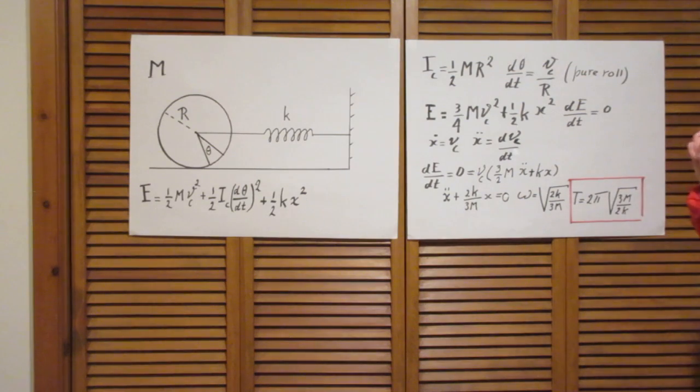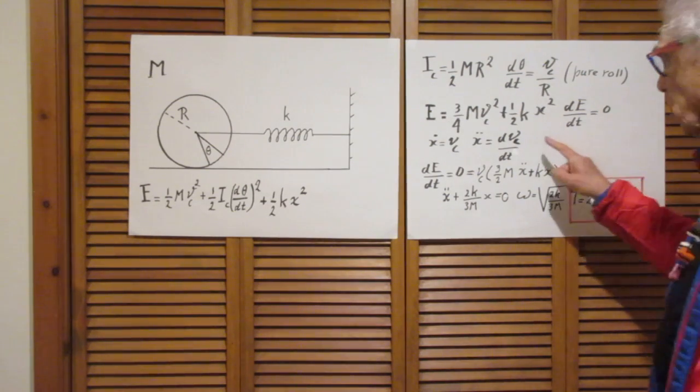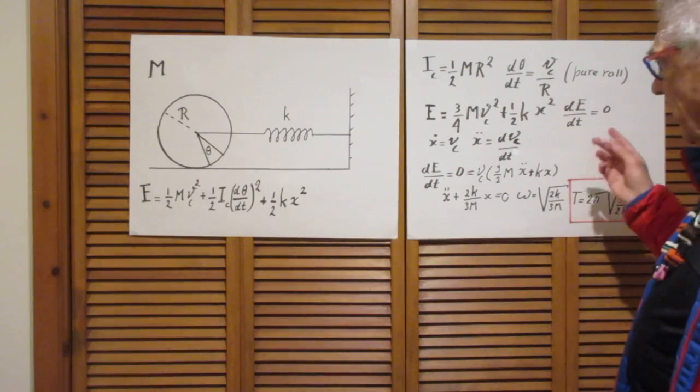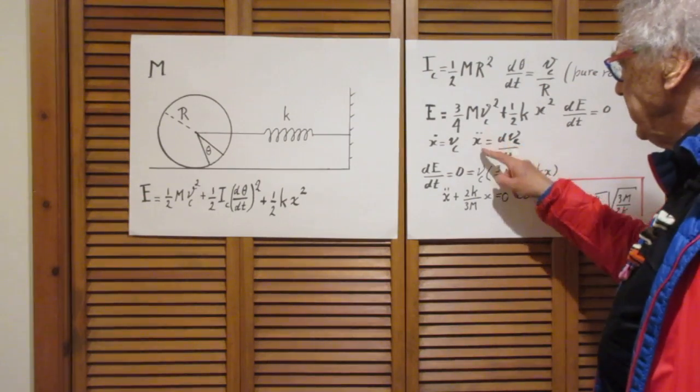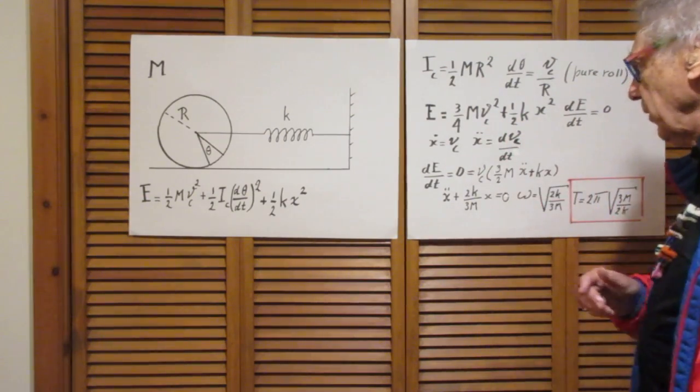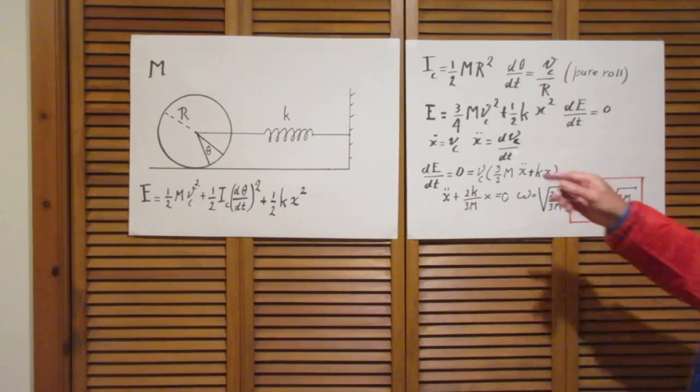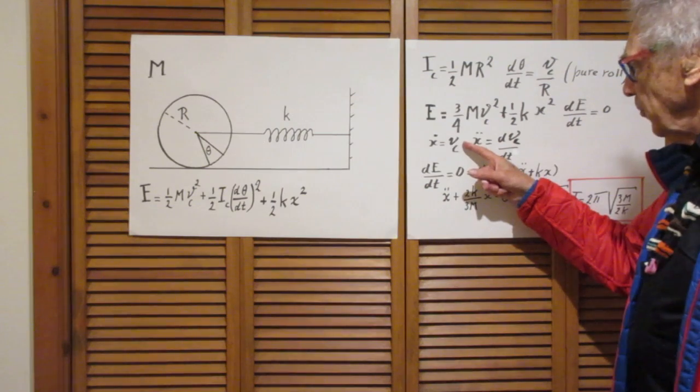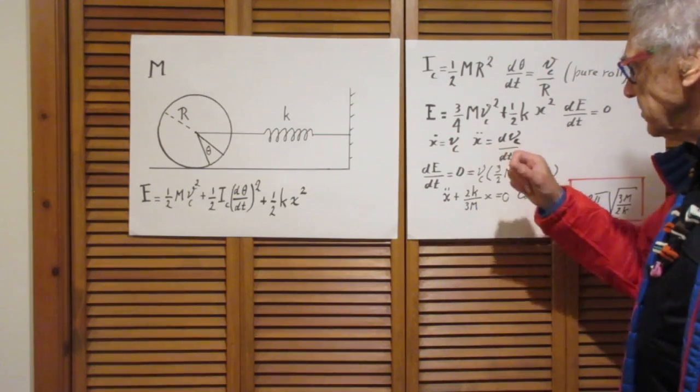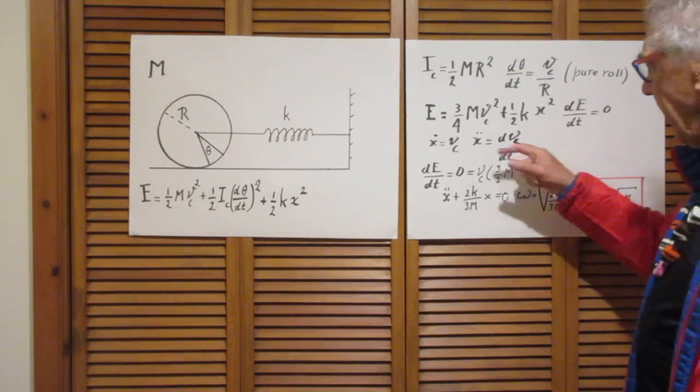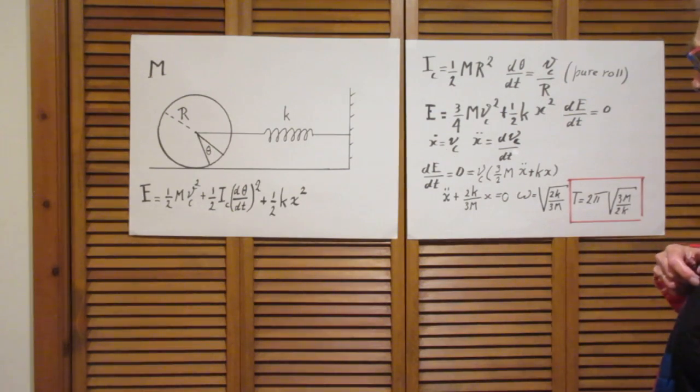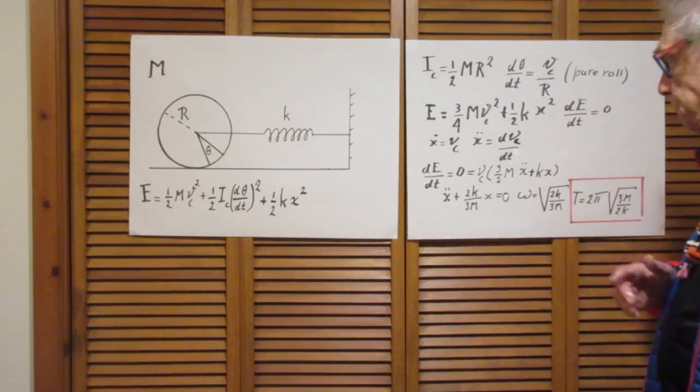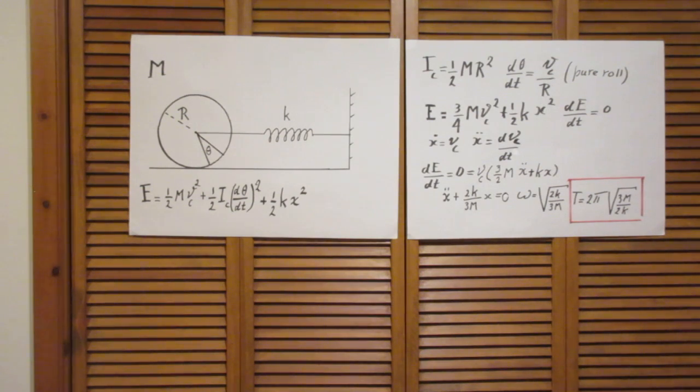So now we take the dE/dt and that is zero. And my shorthand notation, which I have used many times, is that dx dt is x dot and d2x dt squared is x double dot. That's just a shorthand notation. So x dot is, of course, then the velocity of the center of mass. And x double dot is the acceleration of the center of mass, is dvc dt.